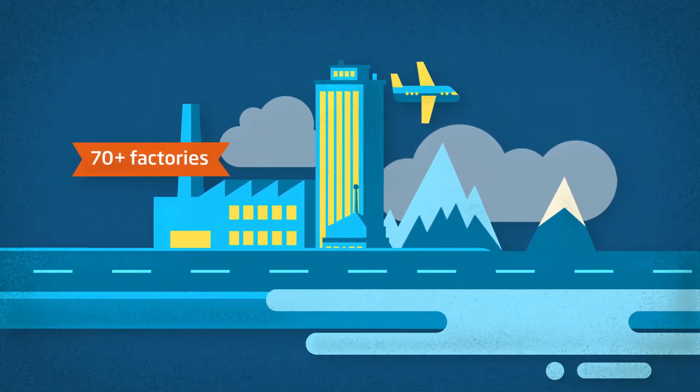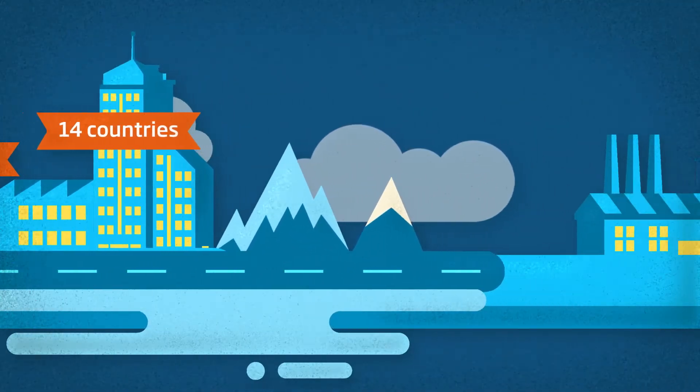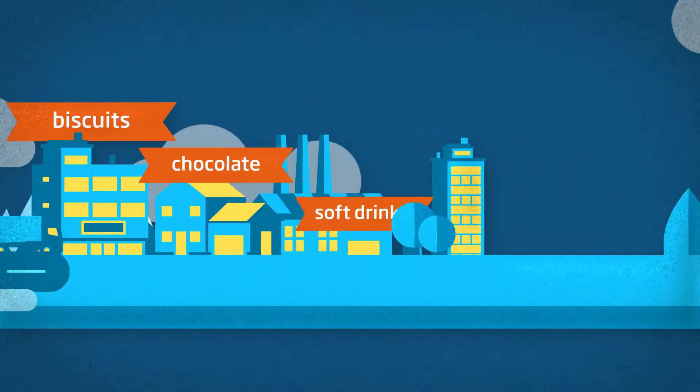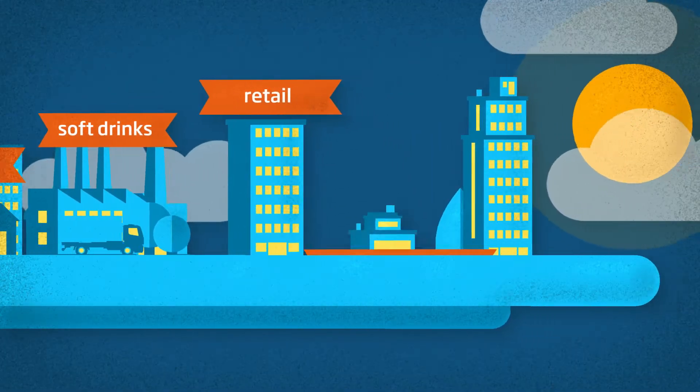With more than 70 factories in 14 countries, we produce hundreds of products, from biscuits to chocolate, from soft drinks to retail and instant foods.